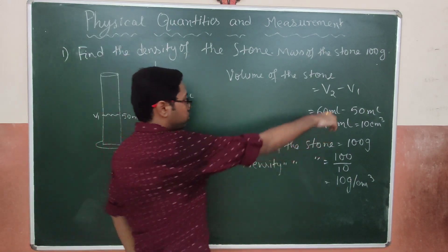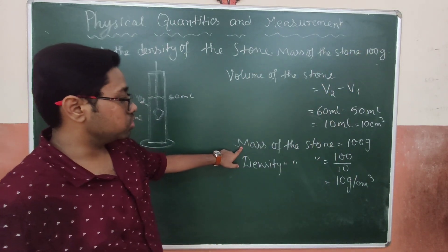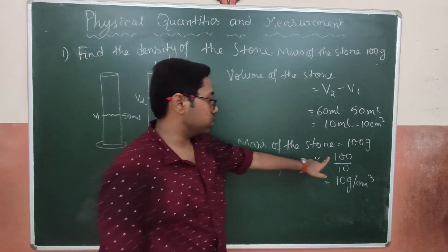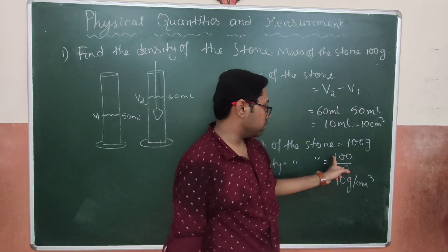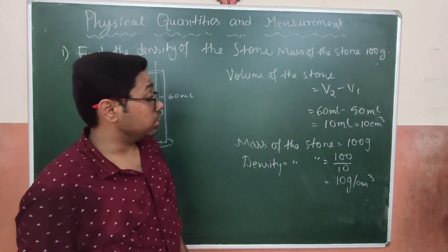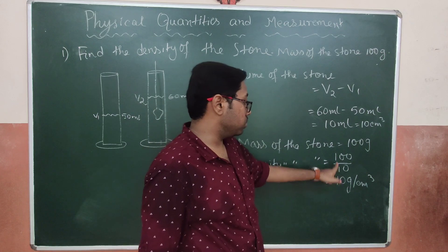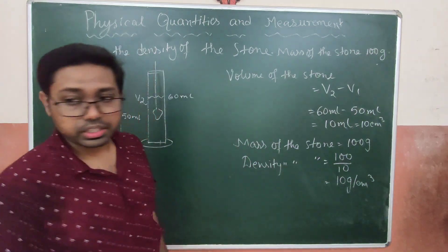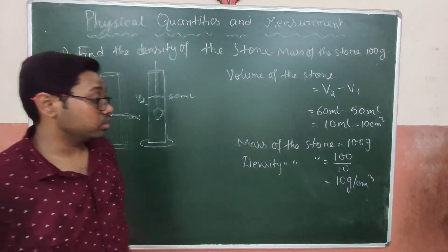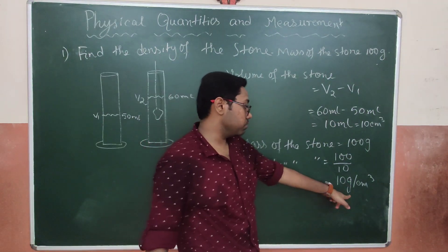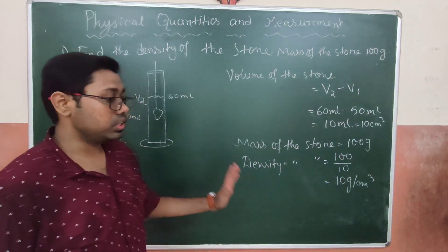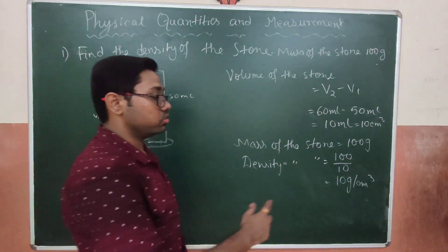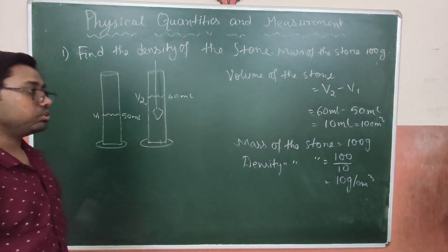The mass of the stone is 100 grams. So density = mass / volume = 100 / 10 = 10 gram per centimeter cube. If the question asks for the answer in SI units (kg per meter cube), we multiply by 1000: 1000 × 10 = 10,000 kg per meter cube.